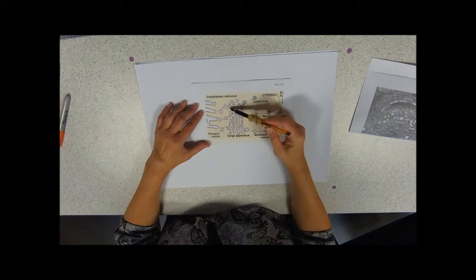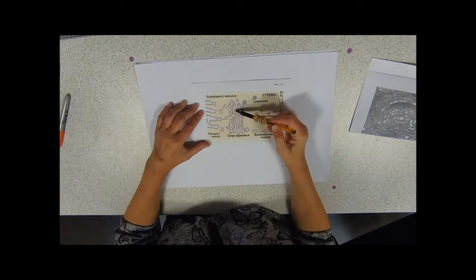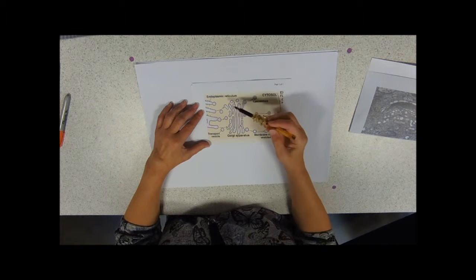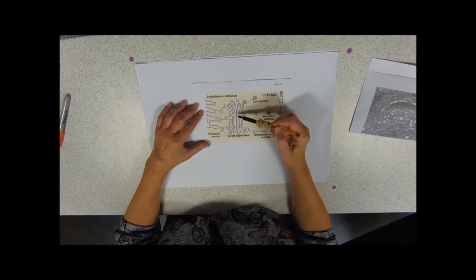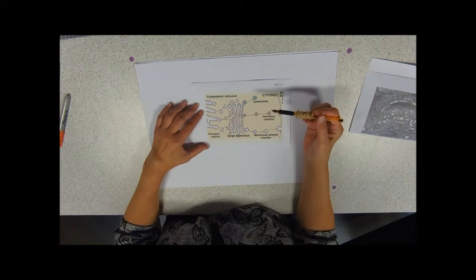As the vesicles are budded off, transported to the next one, budded off, transported to the next one, budded off, transported to the next one, those proteins are being increasingly modified. Now that might be that they're being folded up into their final shape.